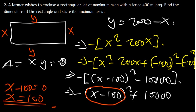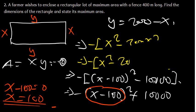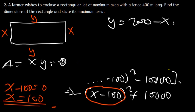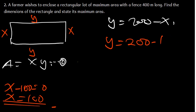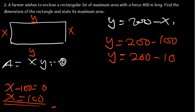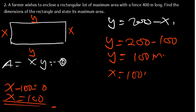Now we find the value of Y. From equation 1, we had Y = 200 minus X. Since X = 100, we get Y = 200 minus 100 = 100. So both X and Y equal 100 meters — those are the dimensions of the rectangle.